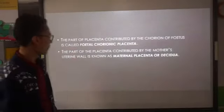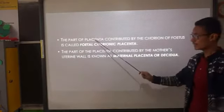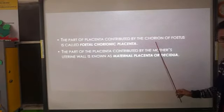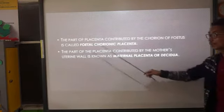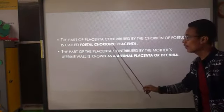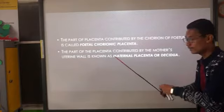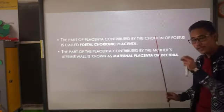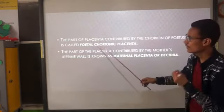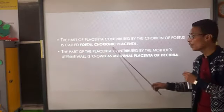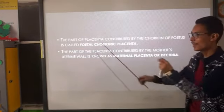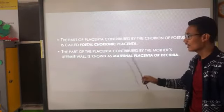Regarding the parts of the placenta: the part of the placenta contributed by the chorion — meaning chorionic villi — is called the fetal chorionic placenta. When the chorionic villi of the fetus become part of the placenta, that portion is called the fetal chorionic placenta.